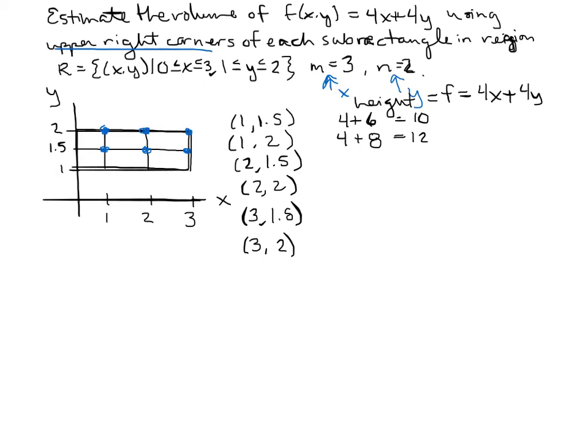When we plug in 2 and 1.5, 2 times 4 is 8. And then 1.5 times 4, we already figured that out. That was 6. So that'll give us 14. When we plug 2 and 2, 2 times 4 is 8. And then 2 times 4 again is 8. So we get 16. There's definitely a pattern here, huh?